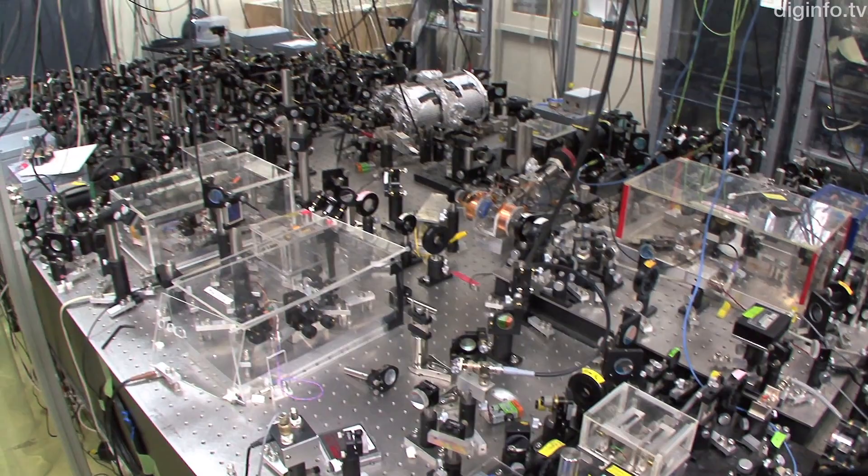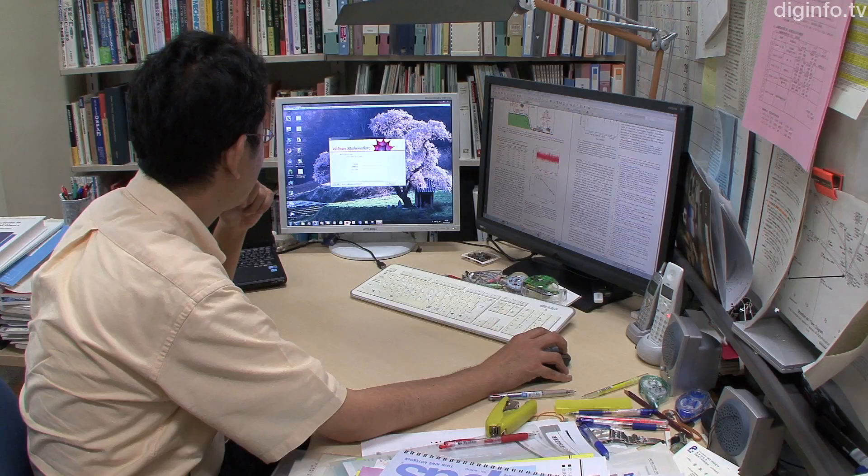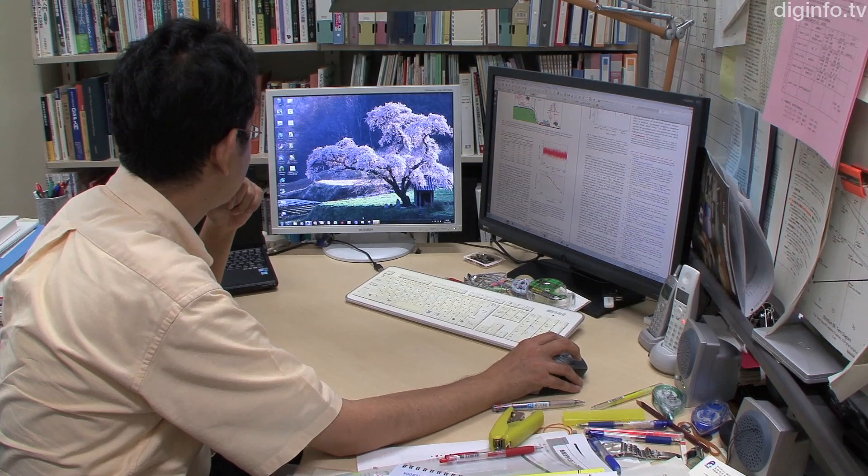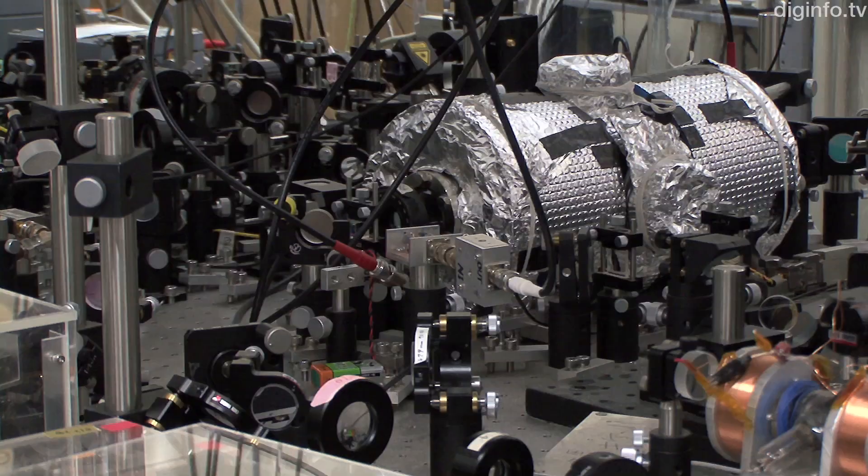Optical lattice clocks are a new type of atomic clock. They were proposed in 2001 by University of Tokyo professor Hidetoshi Katori and experimentally demonstrated in 2005.